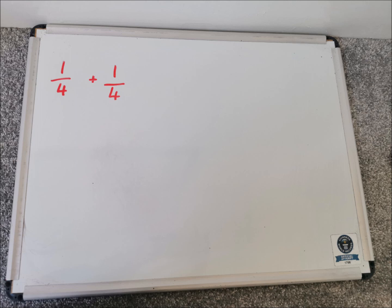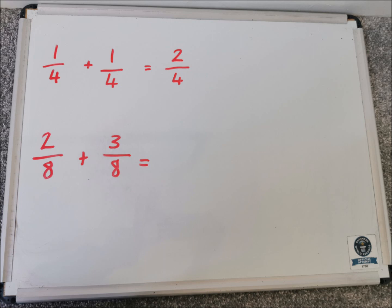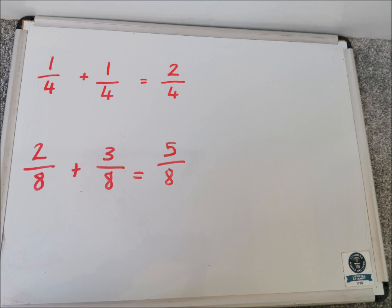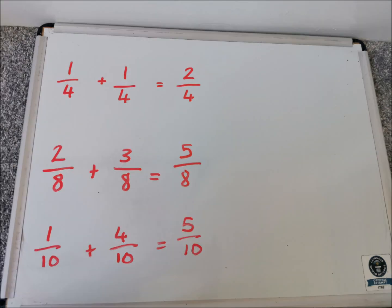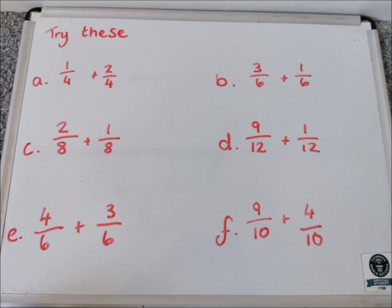So let's have a look at some fraction examples. We have got one quarter add one quarter. We know one thing add one thing is two things, which means we've got two quarters. Next example: two eighths add three eighths. Two things add three things — the answer is going to be five things. The things in this case are eighths, so we'd write five eighths. The denominator does not change, only the numerator changes. One tenth add four tenths — that answer would be five tenths because one add four is five. Here are six examples for you to try. Pause the video and add them all together.